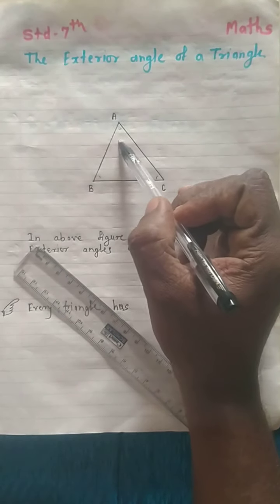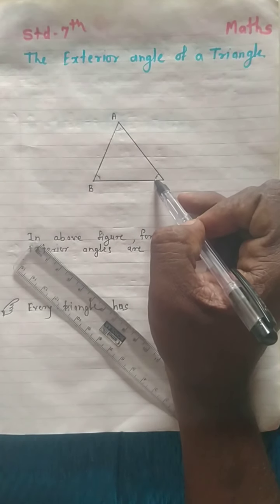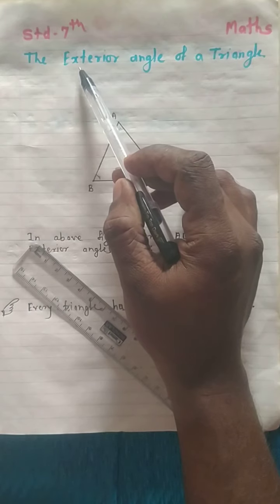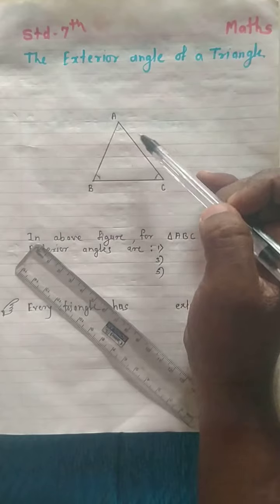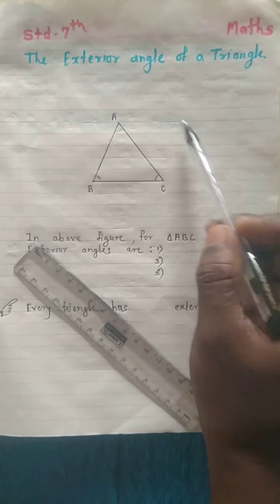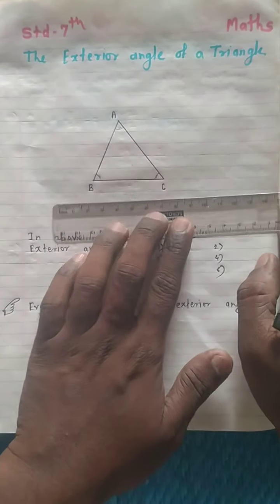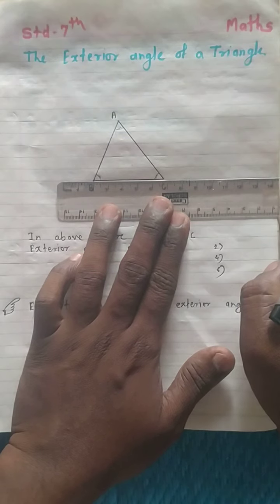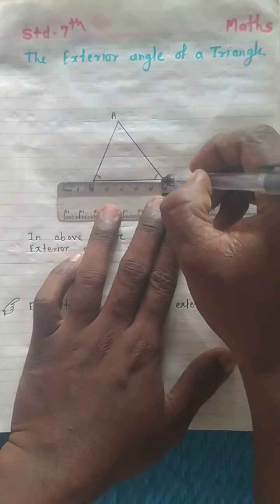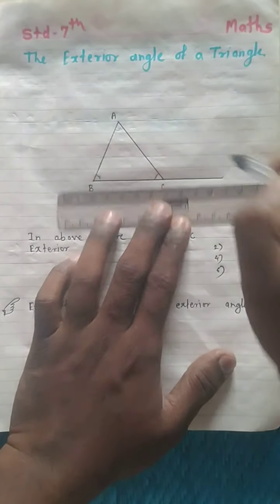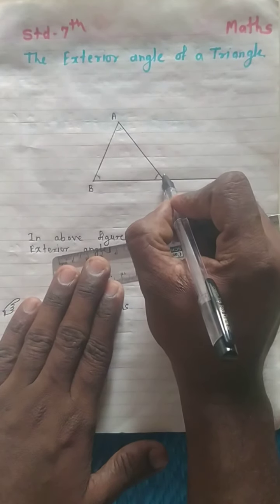The exterior means the angle outside the triangle. These three are interior angles. Now we will learn about what is exterior. To form an exterior angle, how do we extend any side? We will extend any side. Suppose we take side BC, then we will extend it.